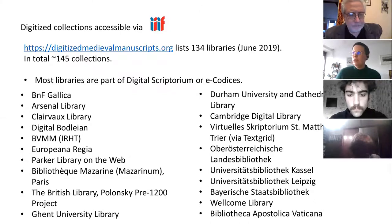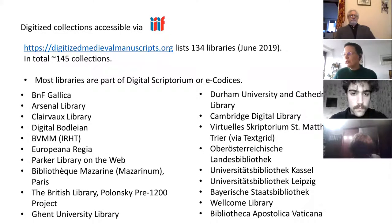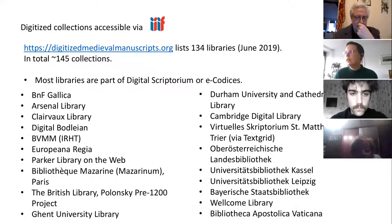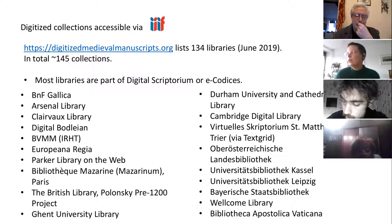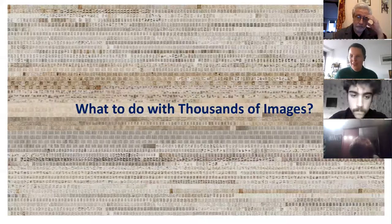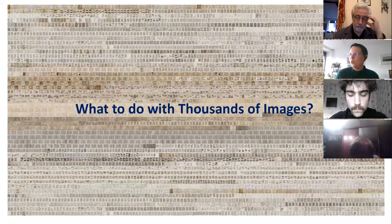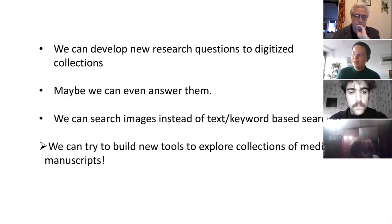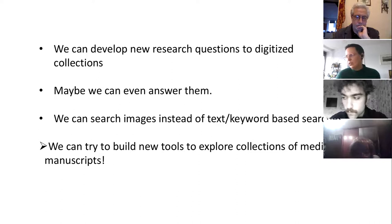Most libraries available via IIIF — the standard that makes it possible to view and compare manuscripts stored in different repositories in one viewer and to compare metadata — are part of the big projects Digital Scriptorium and e-codices Switzerland. Now that we have all those images available, the question arises what we can do with thousands of images. We can access books virtually, develop new research questions, search images instead of classical catalog and keyword-based searches, and build new tools to explore collections of medieval manuscripts.